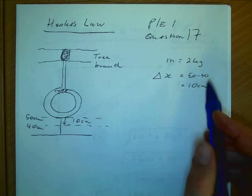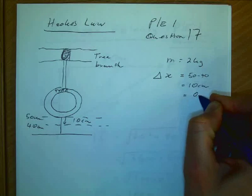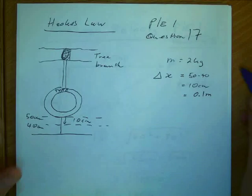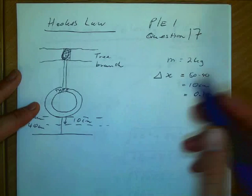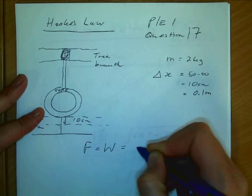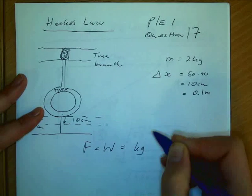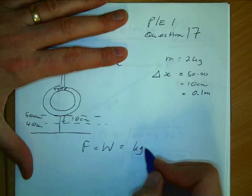And the tire weighs two kilograms, so there's an extension of 10 centimeters, which is 0.1 meters. The mass is acting downwards, so the force of the weight is acting downwards. The force is the weight, that should be kx.